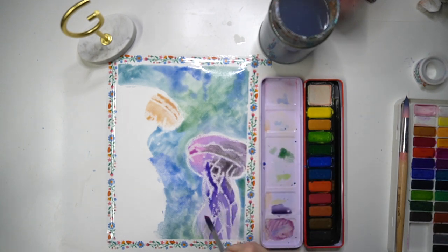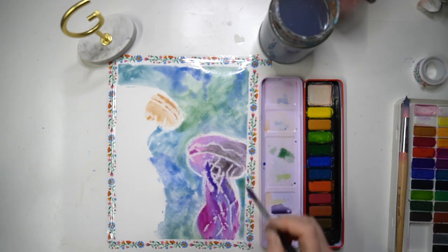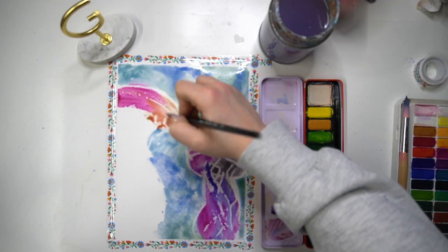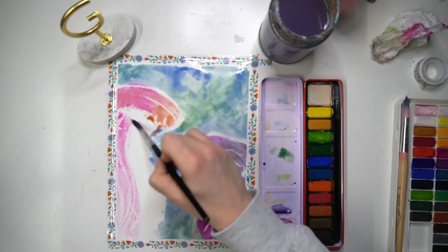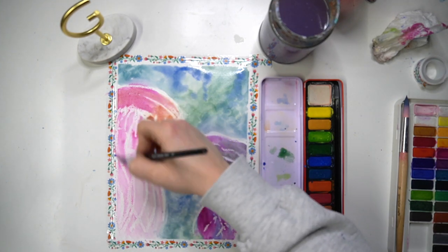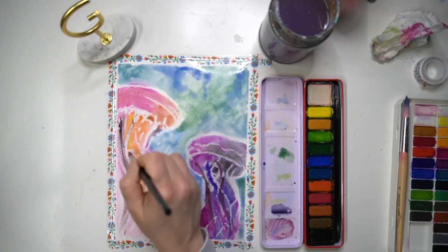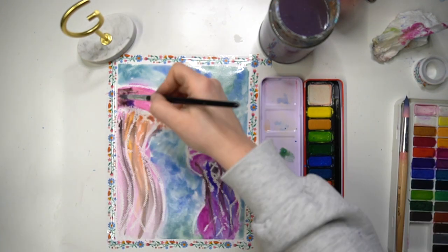I'm just adding the wet-on-wet method over the top of my wax to create this image of the jellyfish and like I said this is one that kids absolutely love creating because they can create secret messages or secret drawings within their watercolour painting.